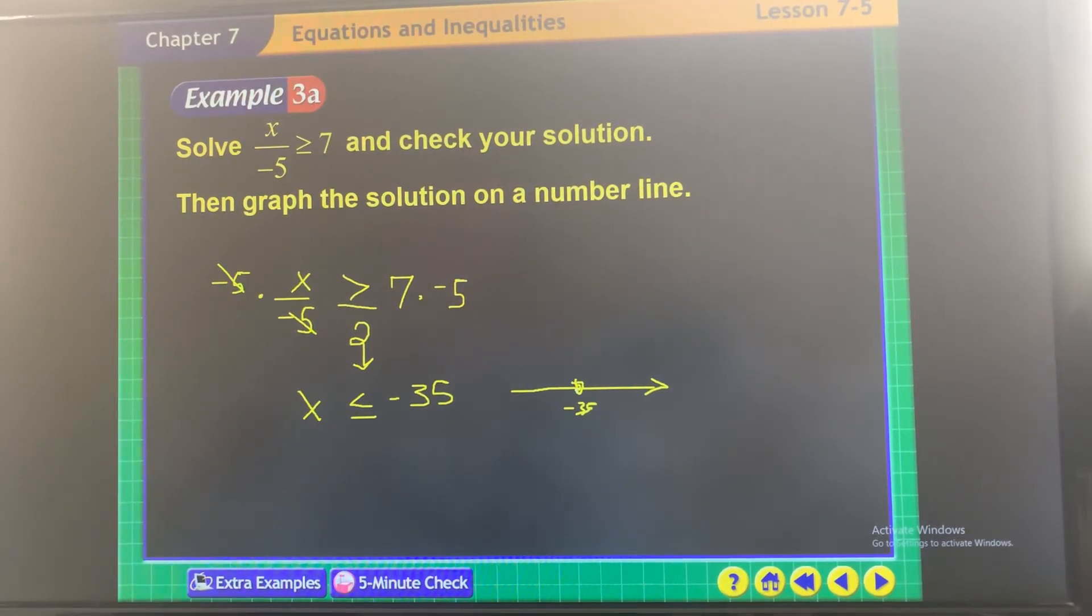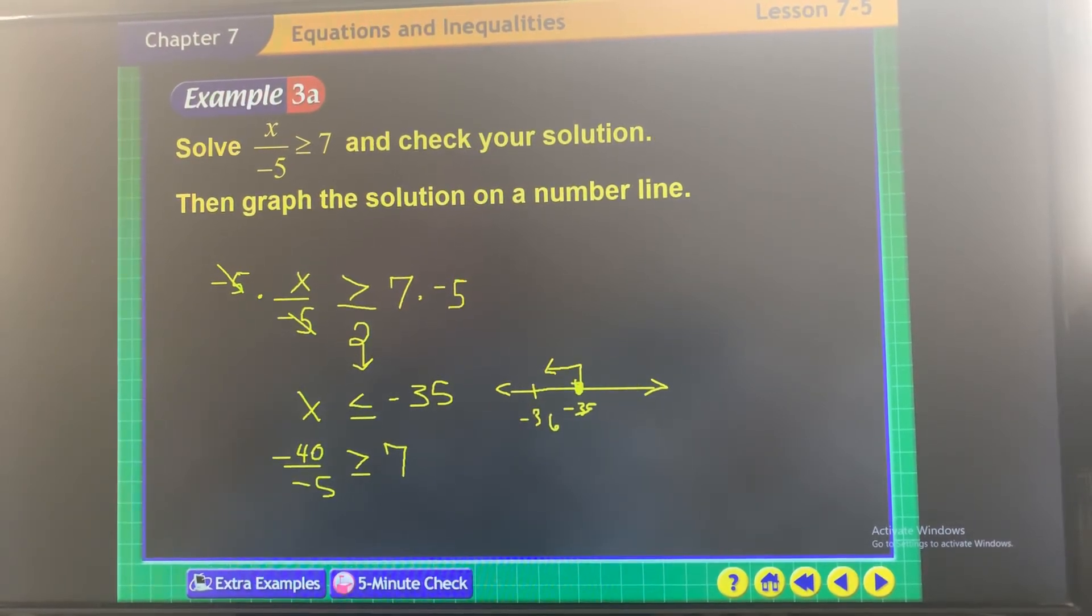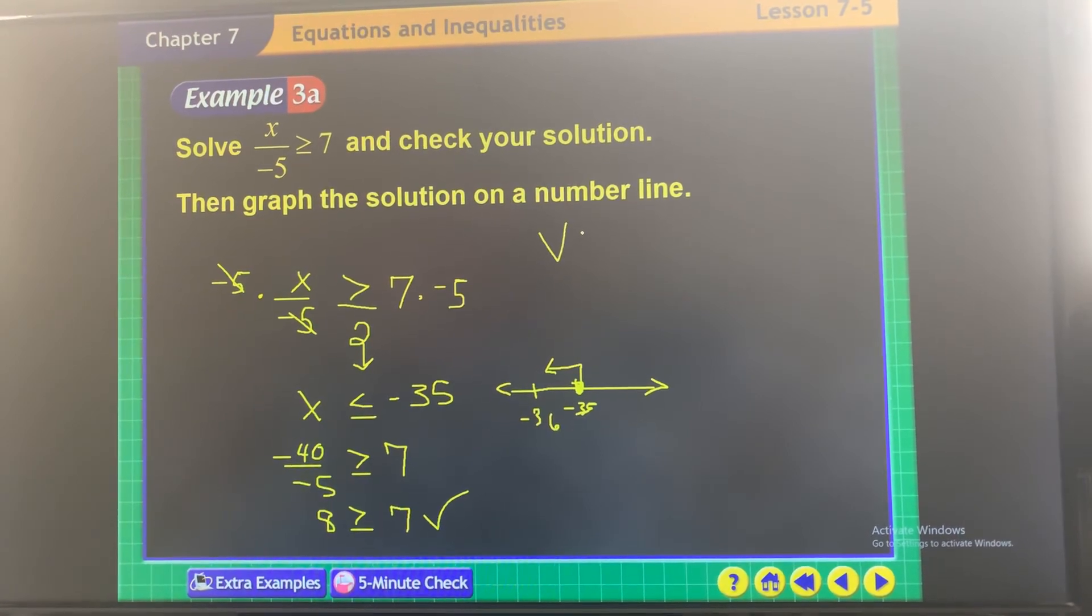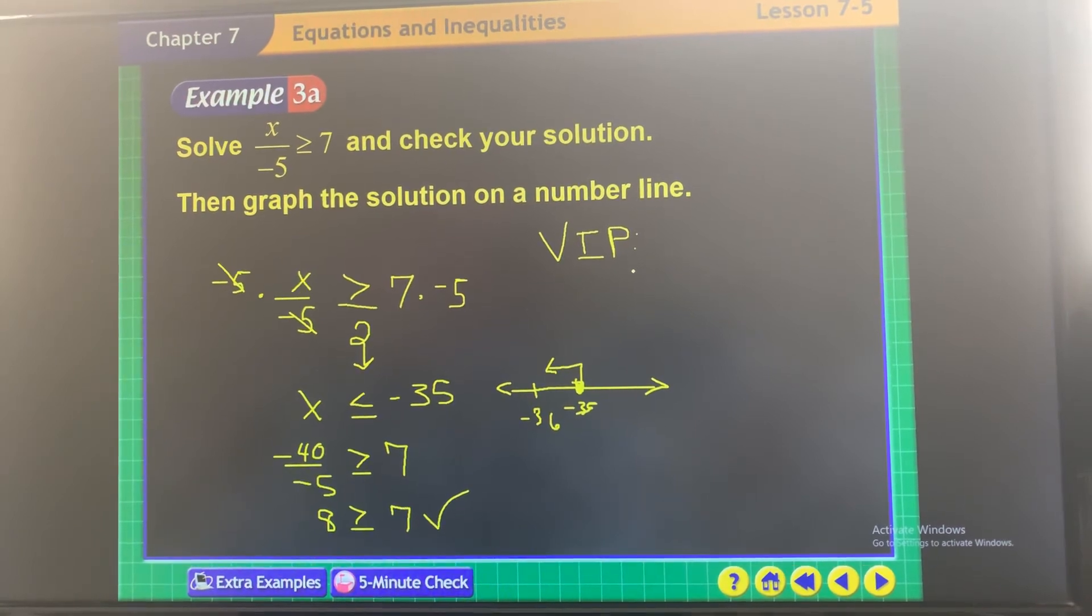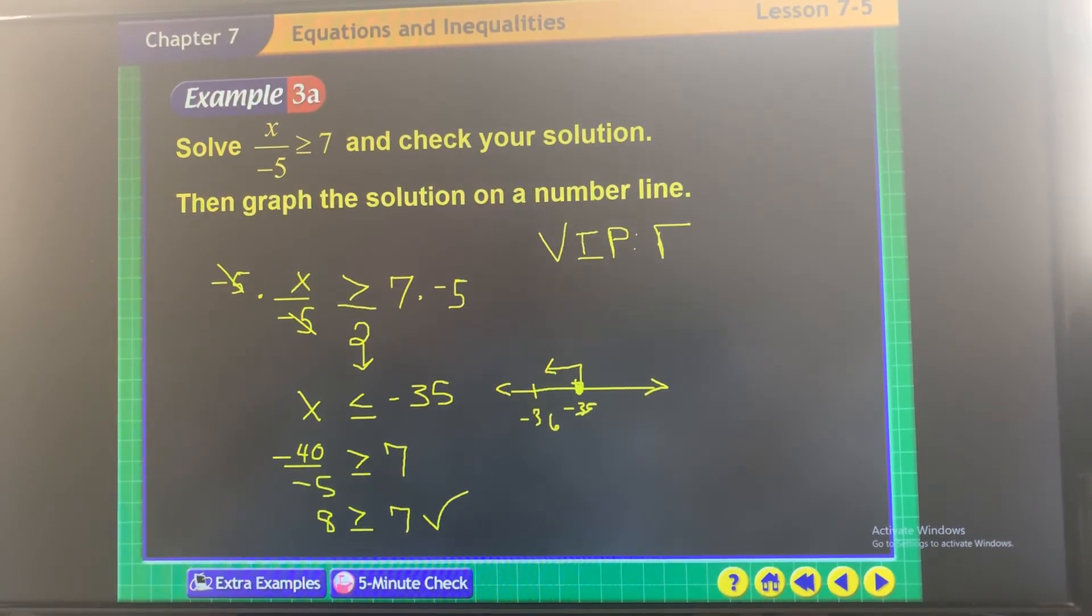So here's negative 35. It's everything including negative 35 and less. Pick a number that gets along with 5, so let's pick, what, 40? Good idea. So negative 40 divided by negative 5, greater than or equal to 7? Negative 40 divided by negative 5 is 8, and 8 is greater than 7, so it checks. So you have to, very important, very important, okay, flip the sign.